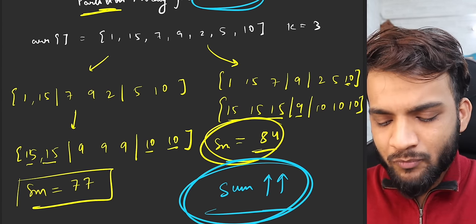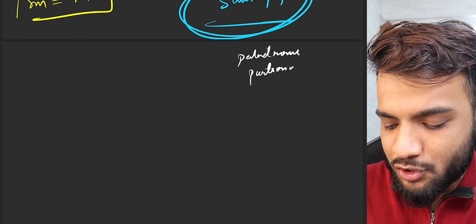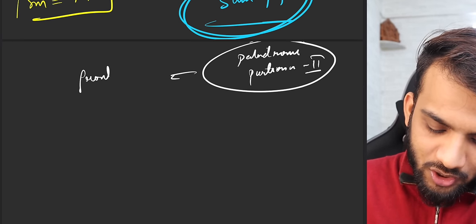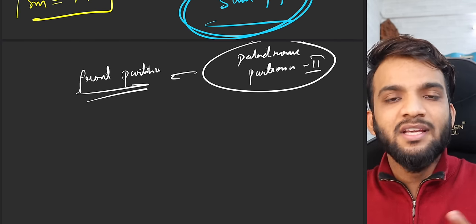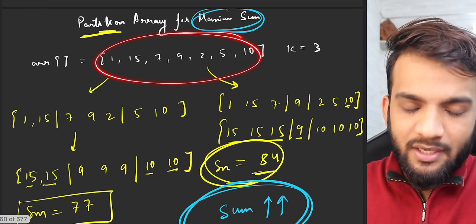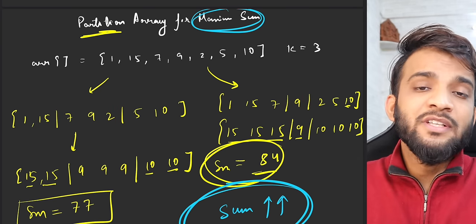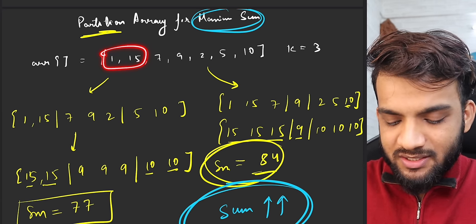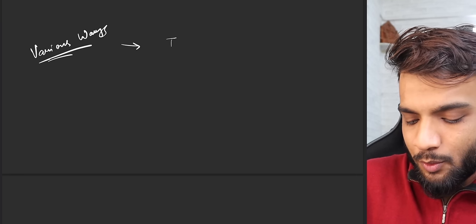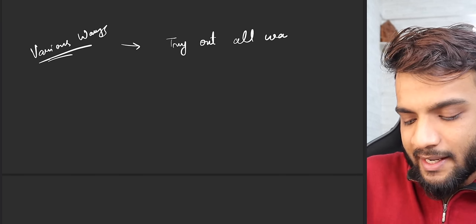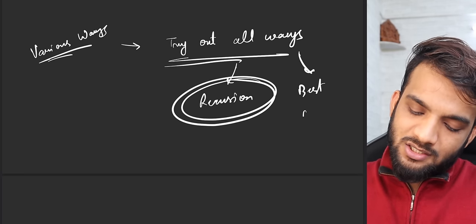This question is quite similar to the palindrome partitioning problem. Before this, we solved 'Palindrome Partitioning II' using the front partition logic. Here too, since there can be various partitions, we try out all possible ways using recursion and take the best one.